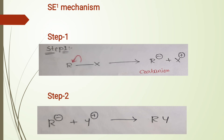In SN1 Mechanism, two products are formed. But in SE1 Mechanism, only one product is formed — that is, the product with retention of configuration.